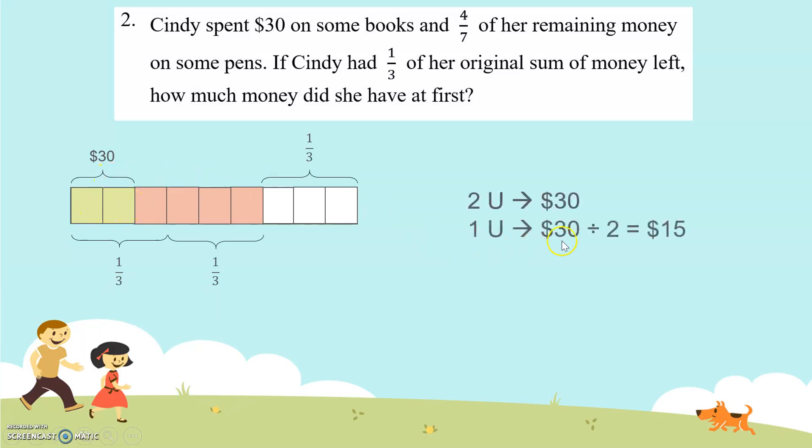Then we find one unit: $30 divided by 2 equals $15. There are altogether nine units, so 9 × $15 which will give you $135. This is your final answer.